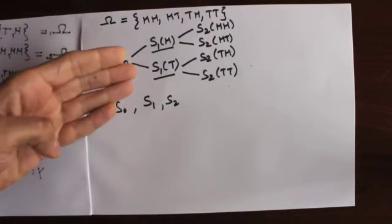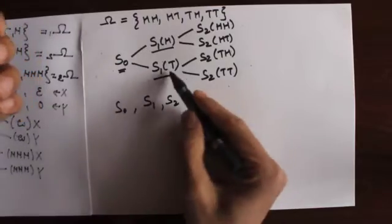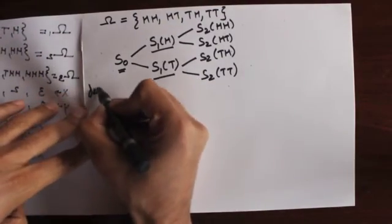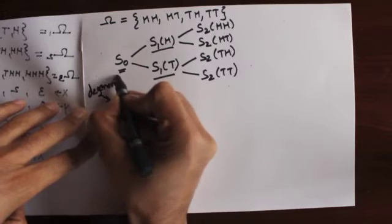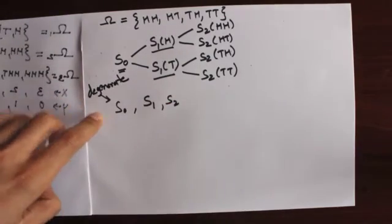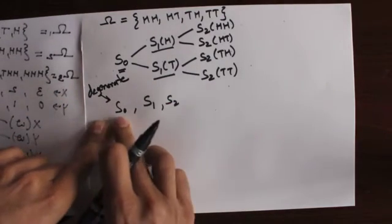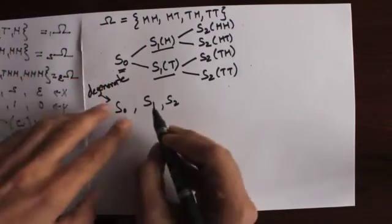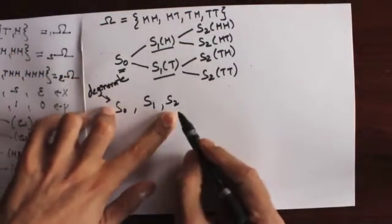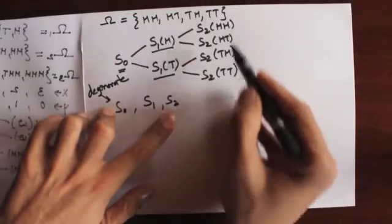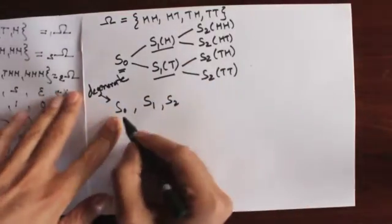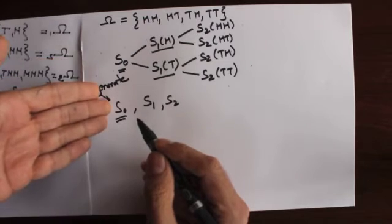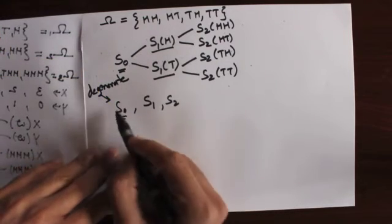s0 is a special case: its value is known at time zero and doesn't depend on any coin tosses. We call this kind of random variable a degenerate random variable — it's not really random because the value is already known. So we've defined three different random variables: s1 depends on the first coin toss, s2 depends on the first two, and s0 is degenerate.